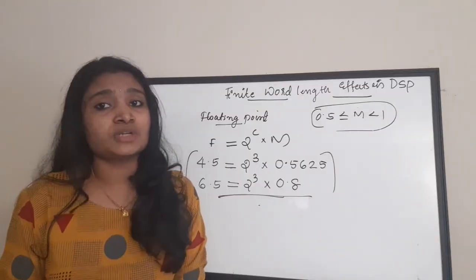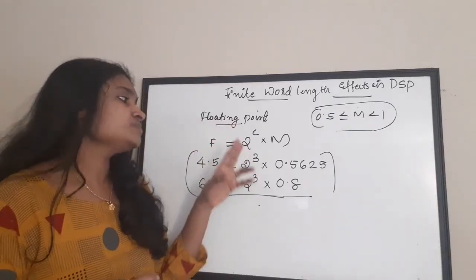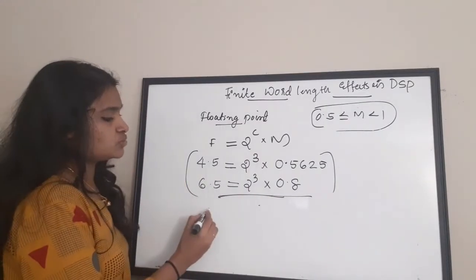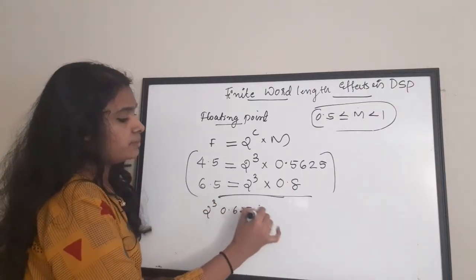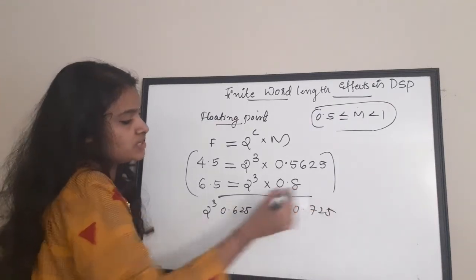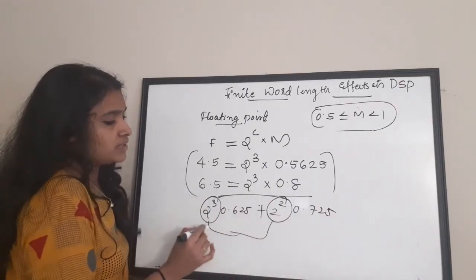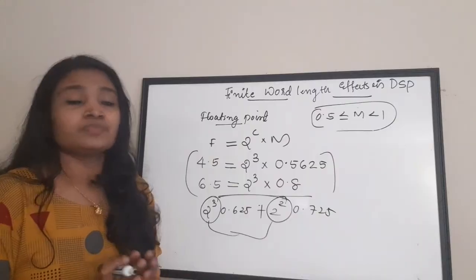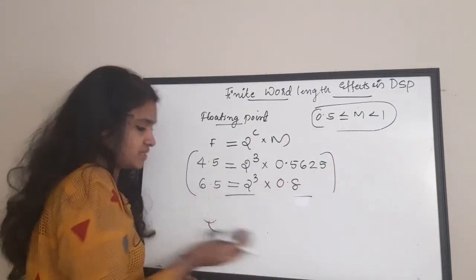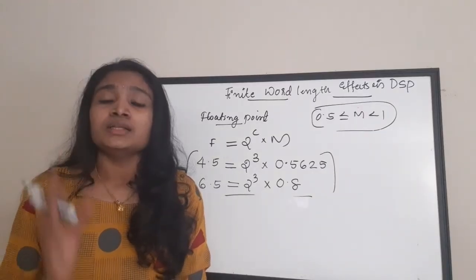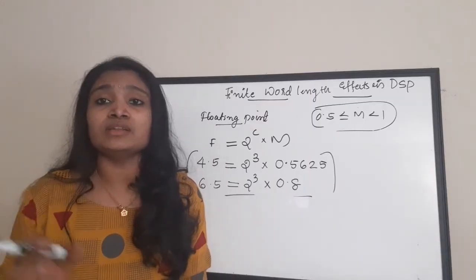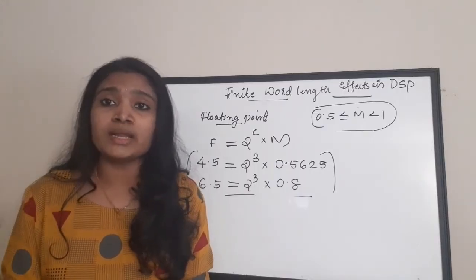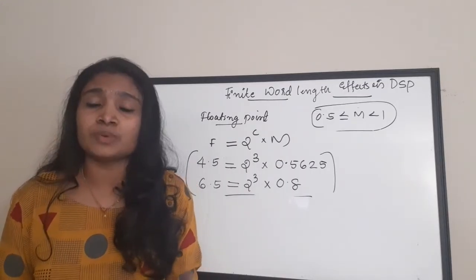For addition and subtraction of floating point numbers, you must make the exponent terms of both numbers equal. For example, if there are two numbers 2^3 × 0.628 plus 2^2 × 0.725, make both exponents equal to either 2^2 or 2^3. Both exponent terms should be equal only then addition is possible, so it is a bit more difficult.